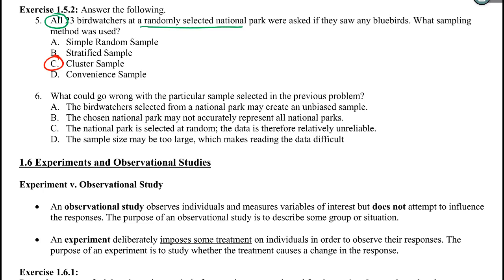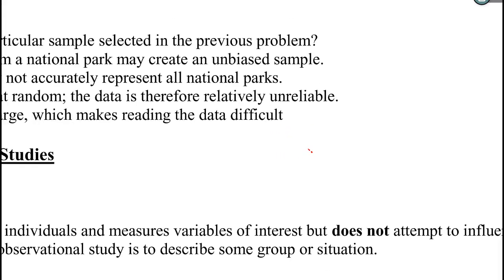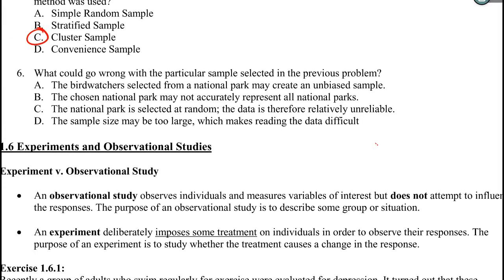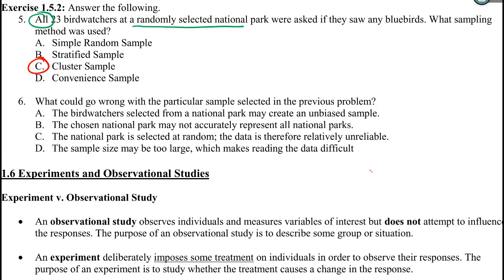Question 6: what can go wrong? Let's go through each answer choice. A: 'A bird watcher selected from a national park may create an unbiased sample.' The issue here is 'unbiased sample' — that would not be a problem, that would be something good. A biased sample would be the problem. So this is really a two-letter issue: I just threw in 'un-' and now it's not a problem at all. Read very carefully — a lot of students read quickly and miss these little things. One way to avoid that is to read every answer choice, because then when you find two that seem right, you realize you just misread one.